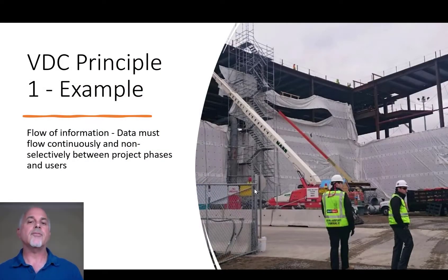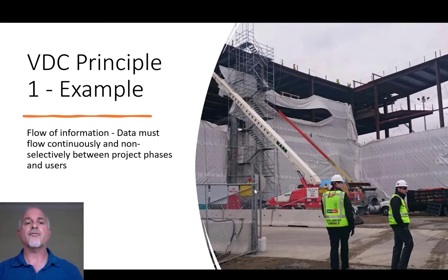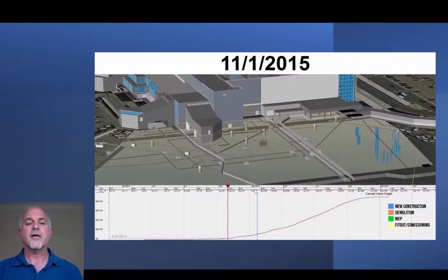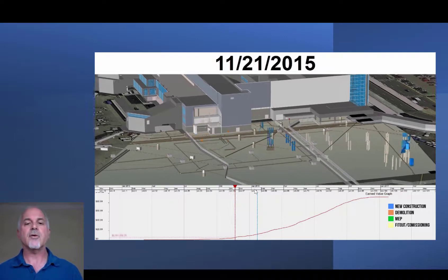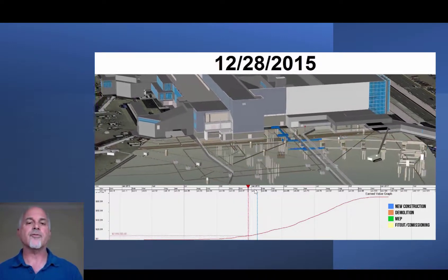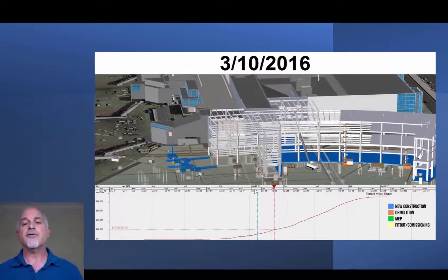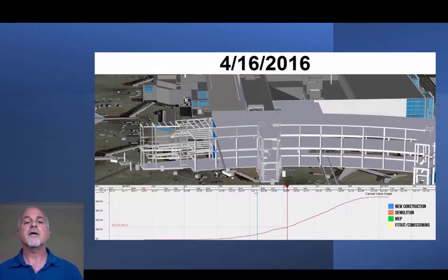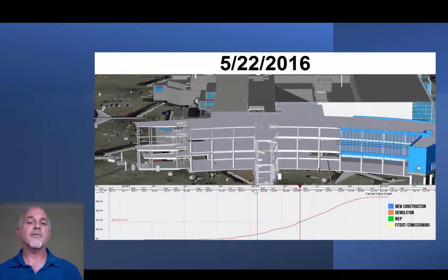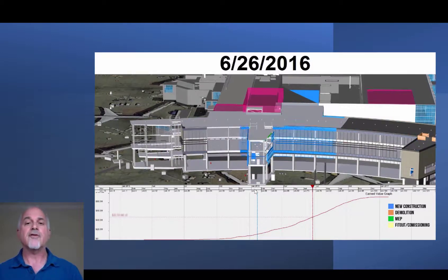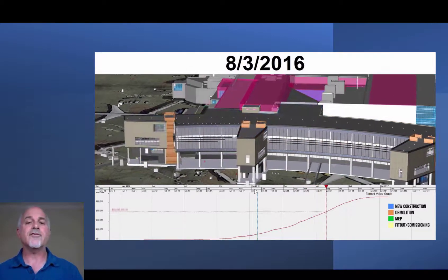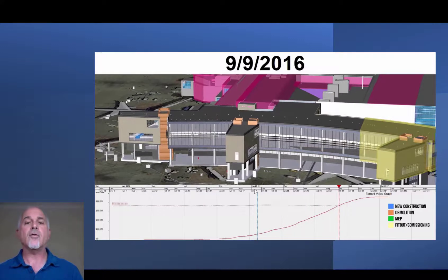I'd like to show one example from actual projects for each of the principles. The first one, as I mentioned, is flow of information. This example comes from an airport project and shows how, during the course of the project, the 3D information or the BIM model is integrated with schedule data and cost data that are continuously updated through the course of the project, as well as the increasing detail of the design model.